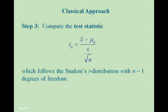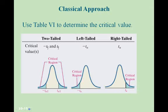Step three: for the classical approach, we compute the test statistic T sub 0, which follows the Student's t-distribution with n minus 1 degrees of freedom. We use table 6 to determine the critical value. For a two-tailed test, we have two critical values, a negative and a positive. A left-tailed test has a negative critical value, and a right-tailed test has a positive critical value.